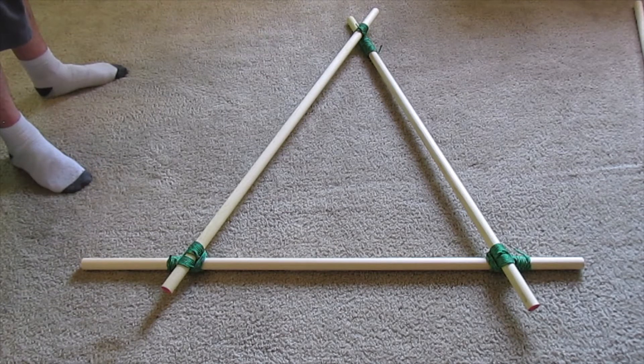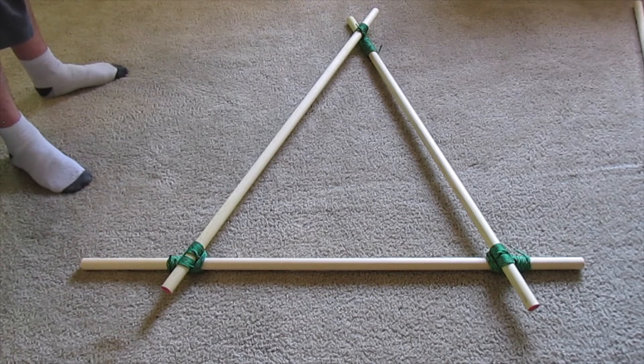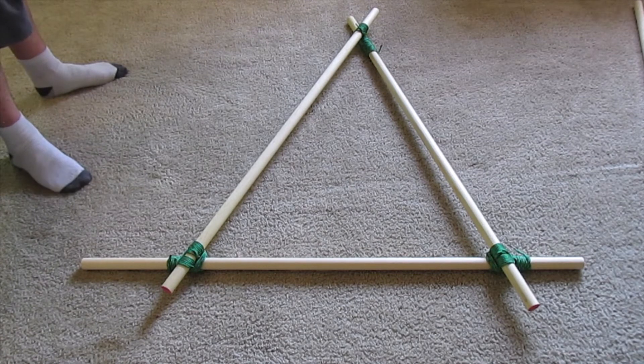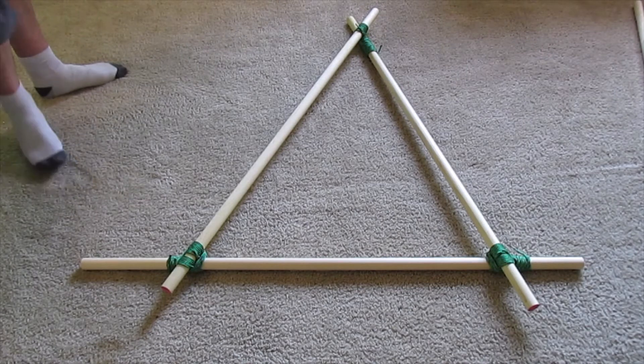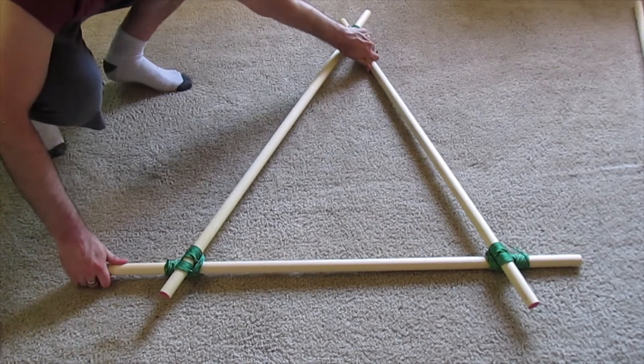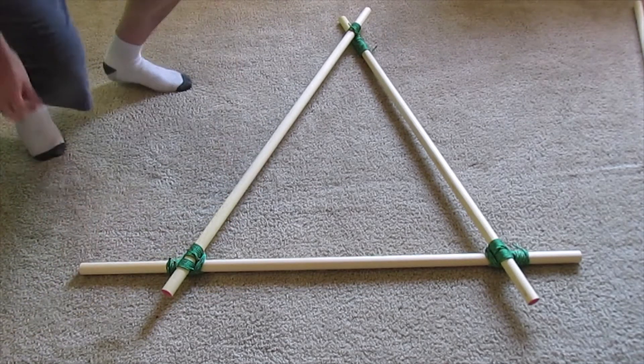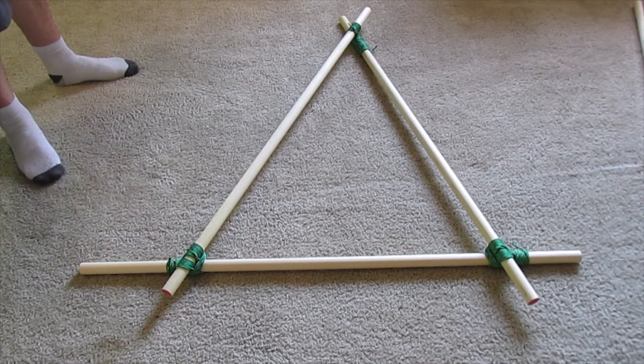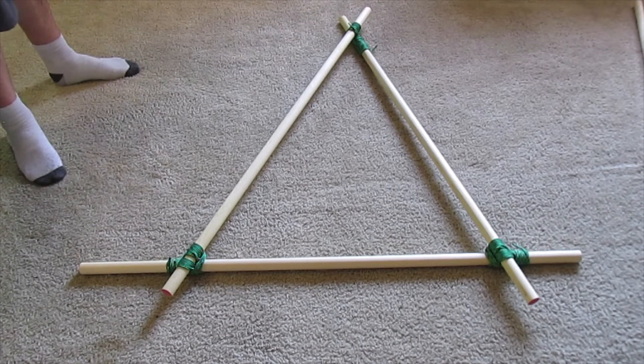And that's it, guys. Only three lashings in this trestle - two square lashings and the shear lashing. Probably some of the easiest lashings there are to do. This trestle is very sturdy. It doesn't move at all in any direction, and that's really what you're trying to get from your trestles. You just don't want any movement.